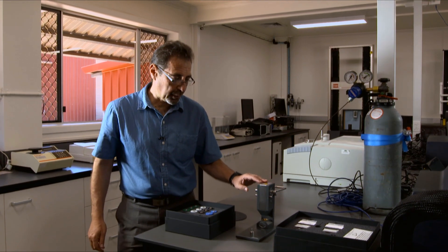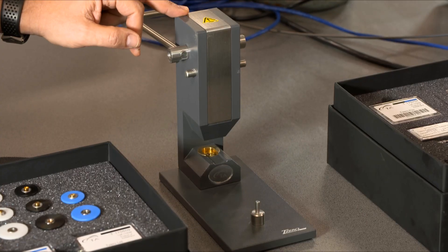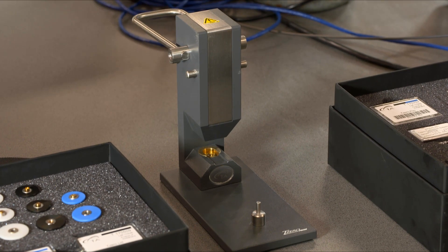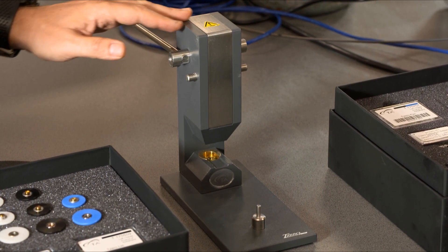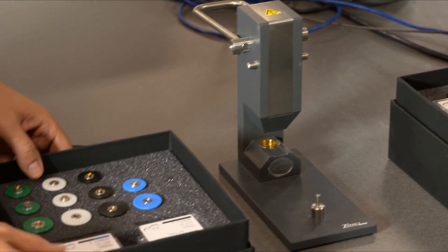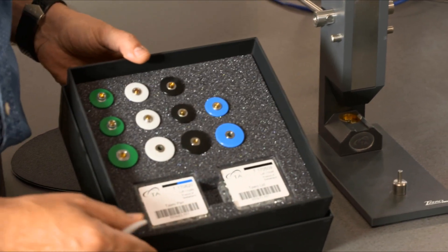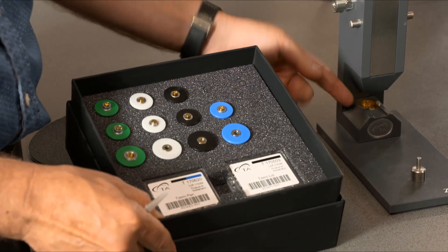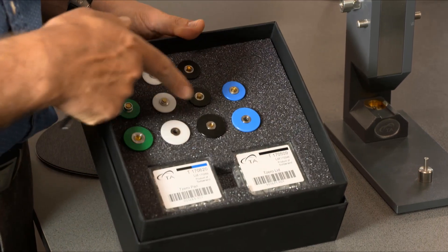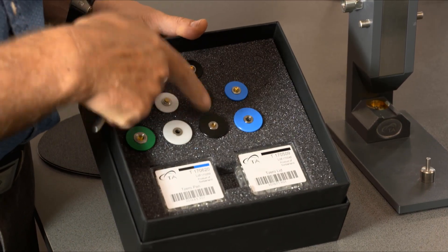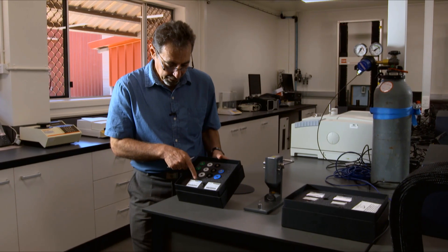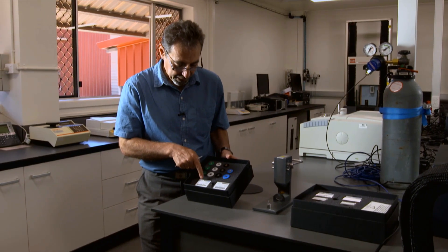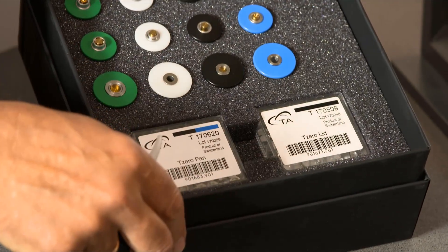T0 Press is used to crimp the samples for a DSC instrument. It comes with a set of dies for the lower part and for the top part. As you can see, dies are color-coded and your boxes with pens and lids will be color-coded too.